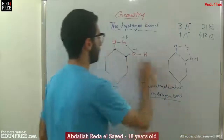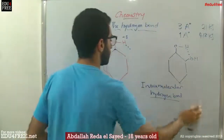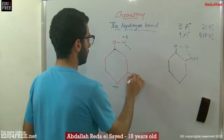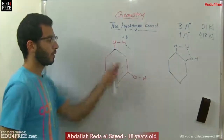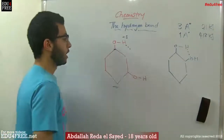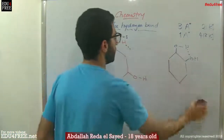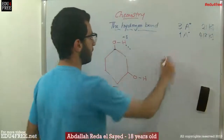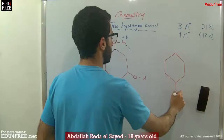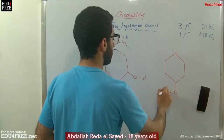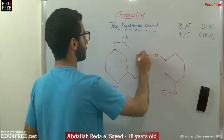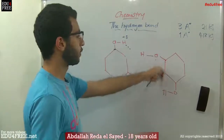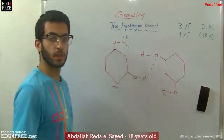But if the substitution is in a different position, it will be far and hard to form a hydrogen bond inside the molecule. So instead, it will form a hydrogen bond with another molecule. If we flip the molecule, it will have this shape, and a hydrogen bond can be easily formed between the two molecules, so the boiling point and melting point increase.